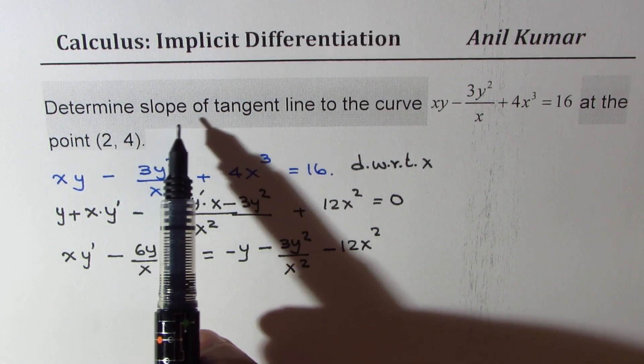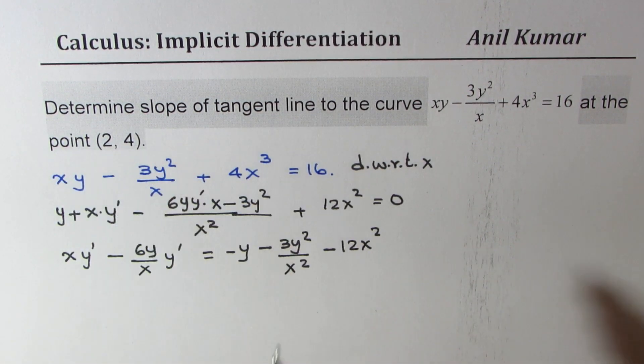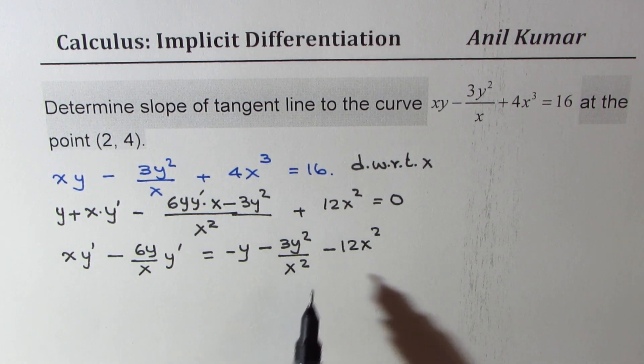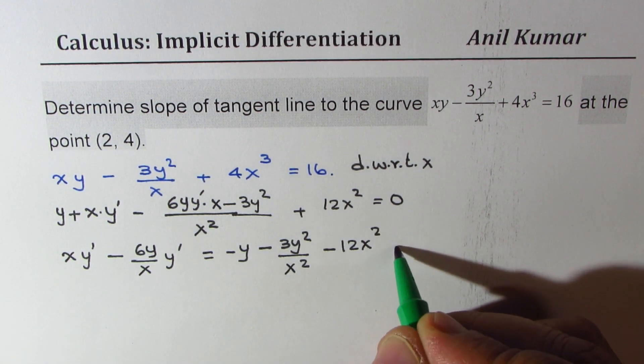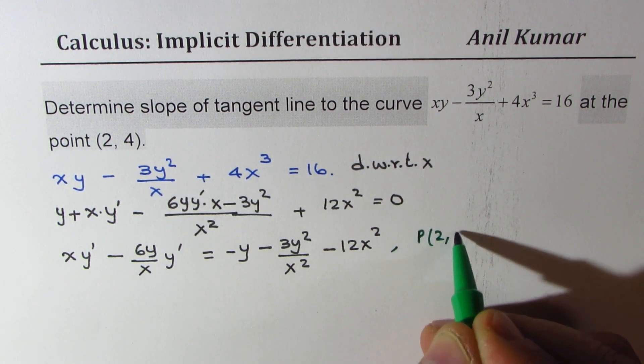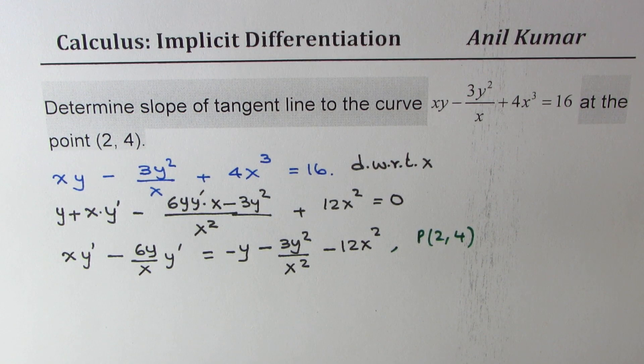Since we need to find the derivative at the point (2, 4), let us substitute 2, 4 in this particular equation. So we are trying to find y dash at a point which is (2, 4). So the x value is 2, y value is 4. Let us substitute.